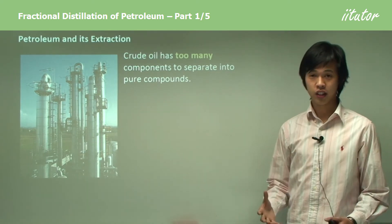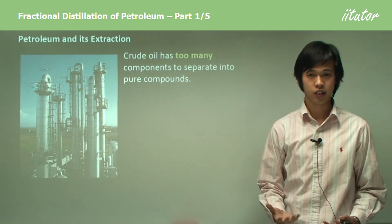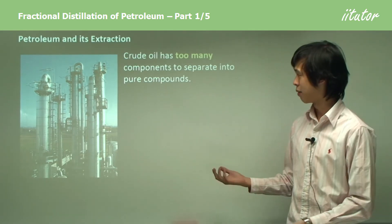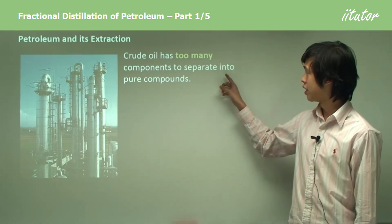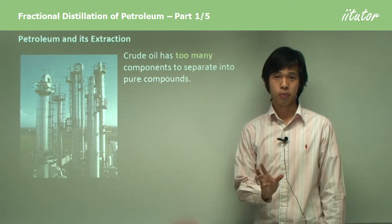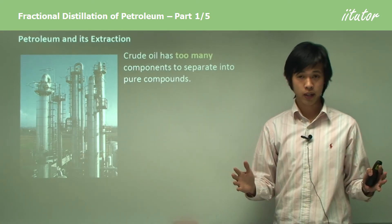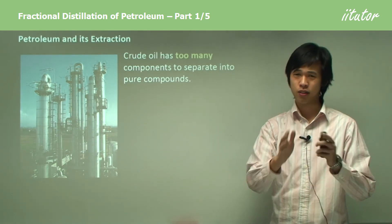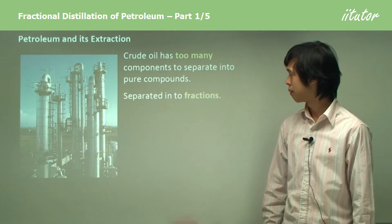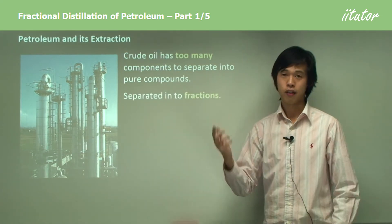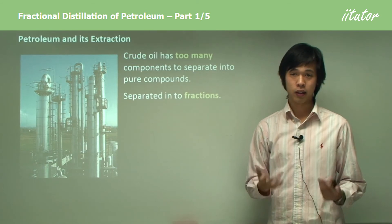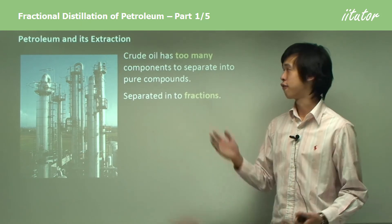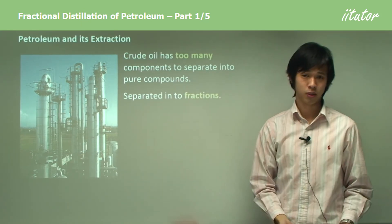Crude oil in itself is like a soup of chemicals — it has just a bunch of different chemicals mixed together to form that black ooze that we pump out of the ground. It has too many components to separate into pure compounds, so because there are so many different compounds, we can't separate just singular compounds. Instead, we separate them into fractions based on boiling point, though those fractions won't be pure — there'll be a bunch of different chemicals in there, but fewer than in the starting crude oil.